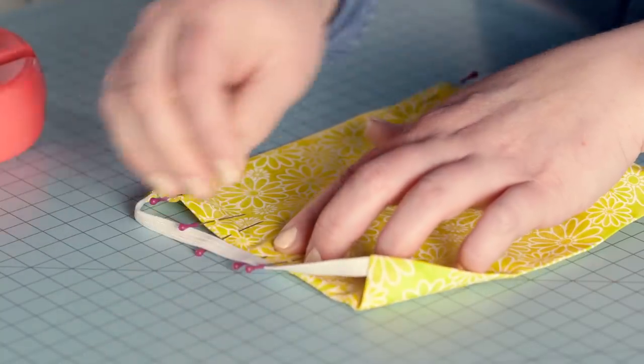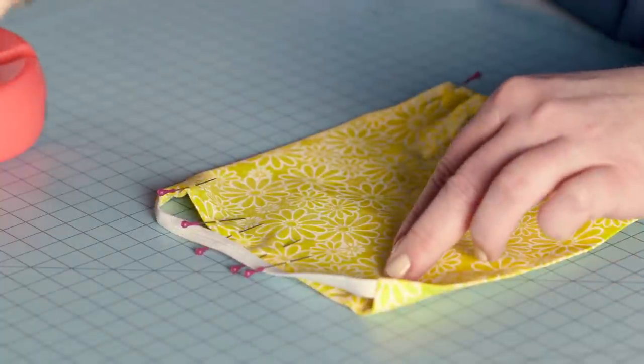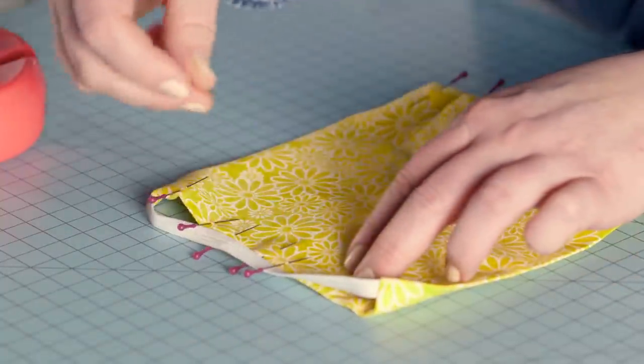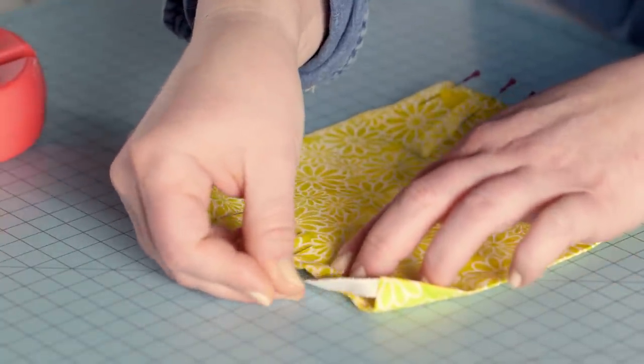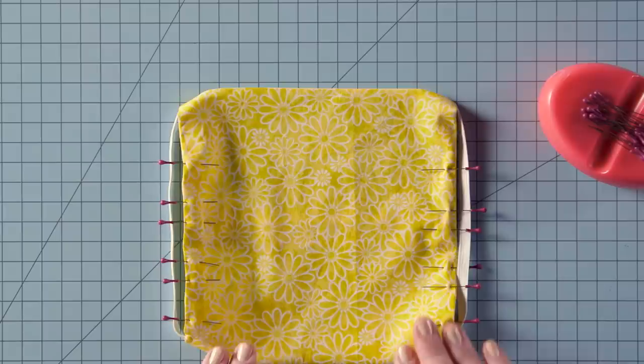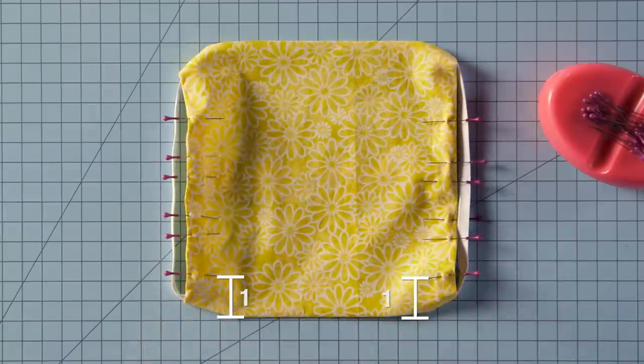To make the pleats, mark the fabric by placing pins one inch from the bottom on each side of the mask. Now keep pinning all the way across. We'll put the correct spacing on the screen for you.